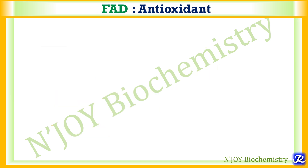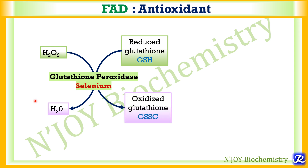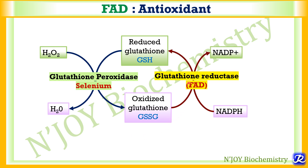FAD can also act as an antioxidant. Glutathione peroxidase, a selenium-containing enzyme, converts hydrogen peroxide to water and is the second line of defense against free radicals. In this process, reduced glutathione is utilized and becomes oxidized glutathione. Oxidized glutathione is converted back to reduced glutathione with the help of glutathione reductase, which requires NADPH and contains FAD. This is how FAD helps in the second line of defense against free radicals and acts as an antioxidant.